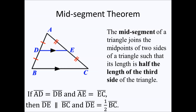The mid-segment of a triangle joins the midpoints of two sides of a triangle such that its length is half the length of the third side of the triangle. If line segment AD equals line segment DB, and line segment AE equals line segment EC, then line segment DE is parallel to line segment BC, and DE is one half the length of line segment BC.